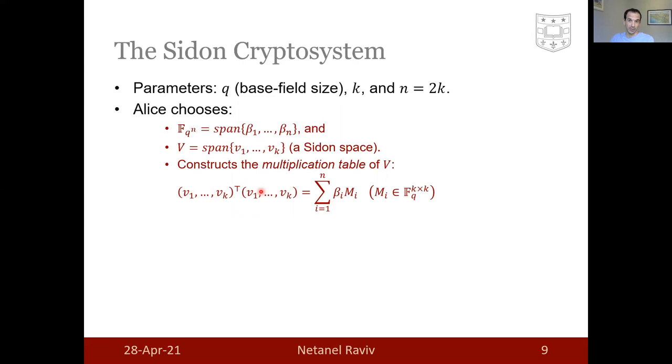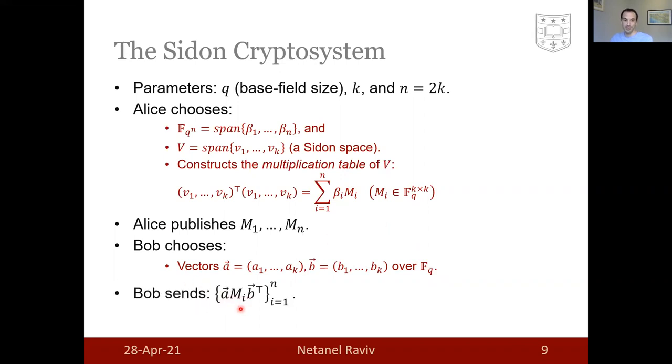This is a k by k matrix over the extension field F_q^n, and as such it can be represented as a linear combination of some matrices times the basis elements beta_1 through beta_n. These matrices over here are k by k matrices over F_q. These matrices will be precisely the public key which Alice publishes. When Bob wants to send something to Alice, it will map its message into two vectors of length k over F_q and send the bilinear product of these elements by the matrix M.